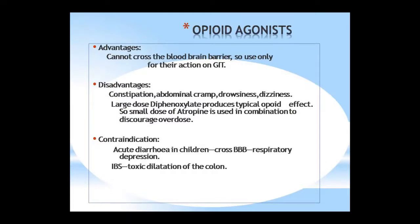Opioid agonists used for diarrhea cannot cross the blood-brain barrier, so they show their action only in the GIT. Side effects include constipation, abdominal cramps, pain, drowsiness, and dizziness. Large doses of diphenoxylate produce typical opioid effects. At small doses, atropine is used in combination to prevent overdose. Contraindications include acute diarrhea in children, and it causes respiratory depression. It is also contraindicated in IBS and toxic dilatation of the colon.